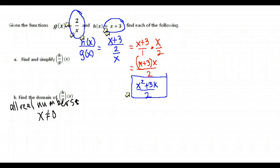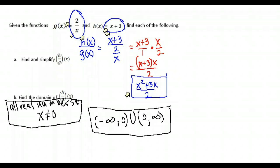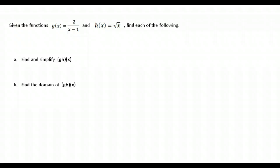g of x — the 2 over x — has a problem: fractions cannot have a denominator of zero, so x cannot equal zero. Our domain is all real numbers with x not equal to zero. In interval notation, we go from negative infinity to zero, not including it, then union from zero to infinity. So you write everything except zero by cutting it out in the middle. Even though our result didn't have this restriction, we had to go back to the original g of x, which had x in the denominator.